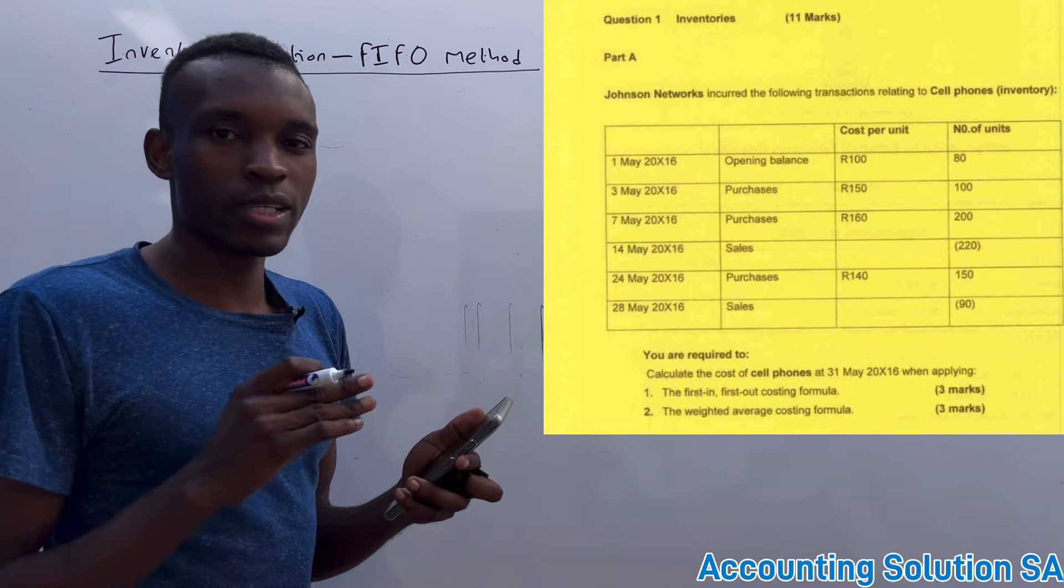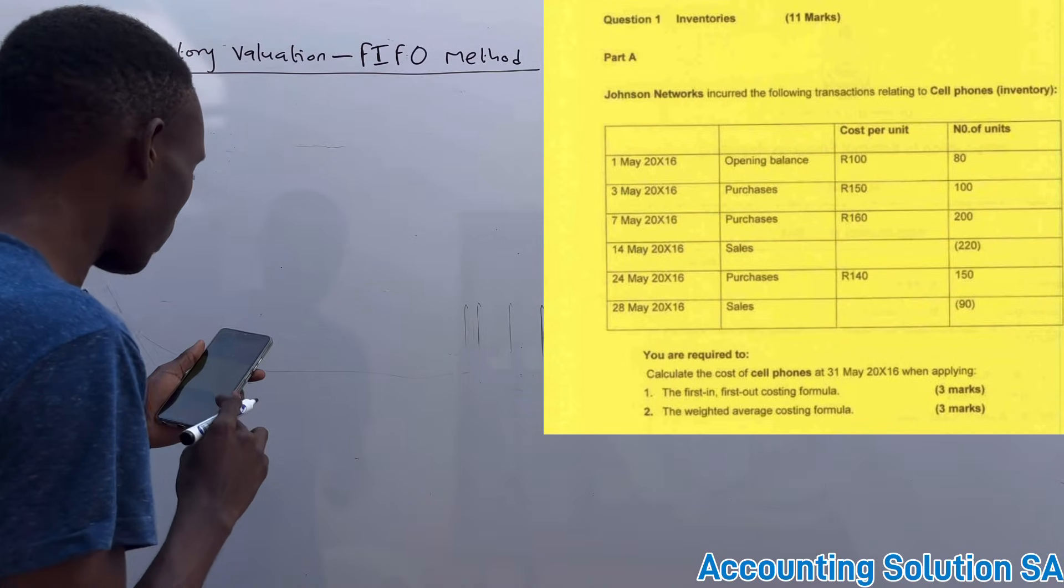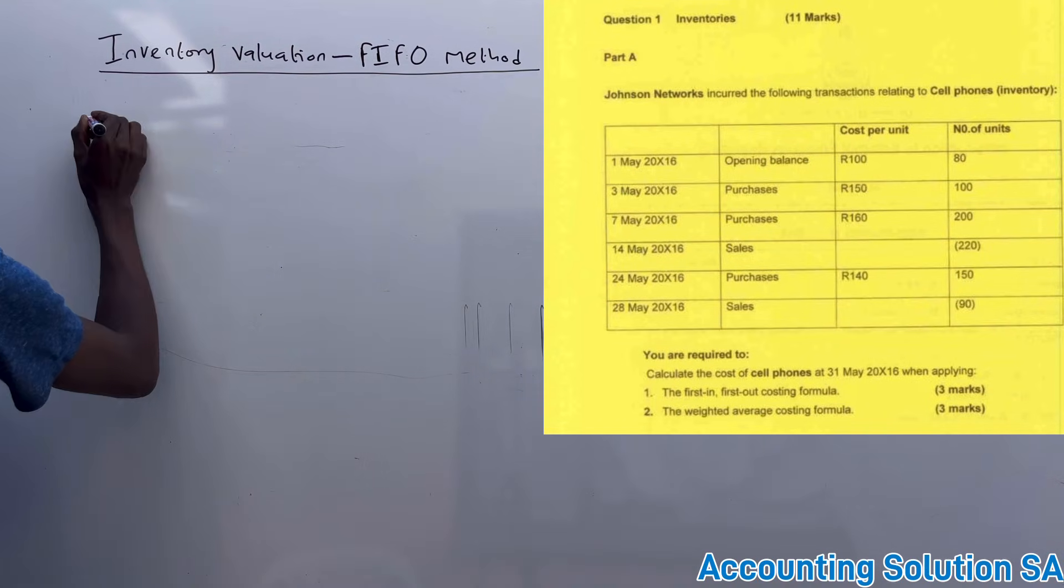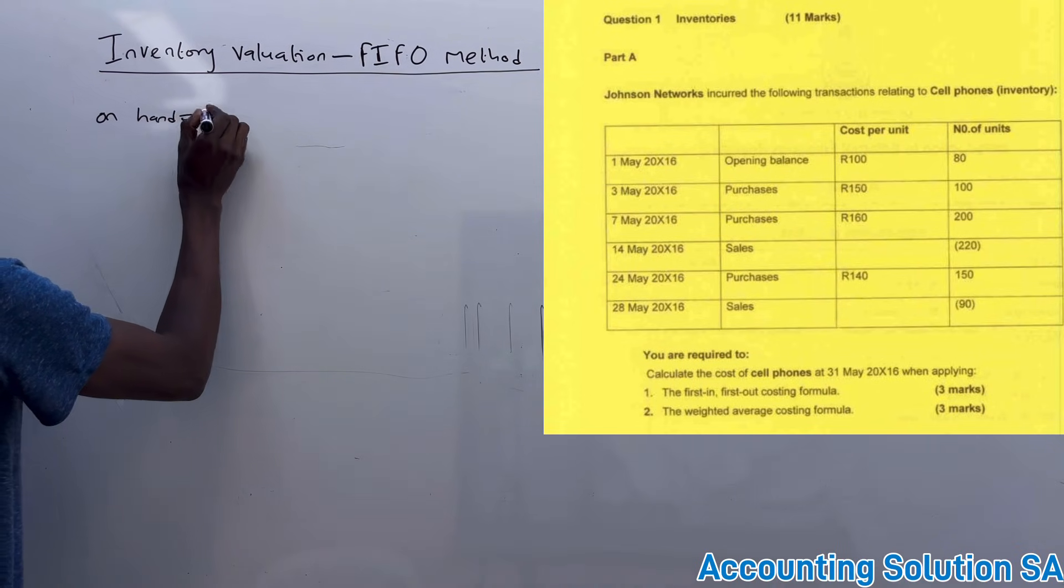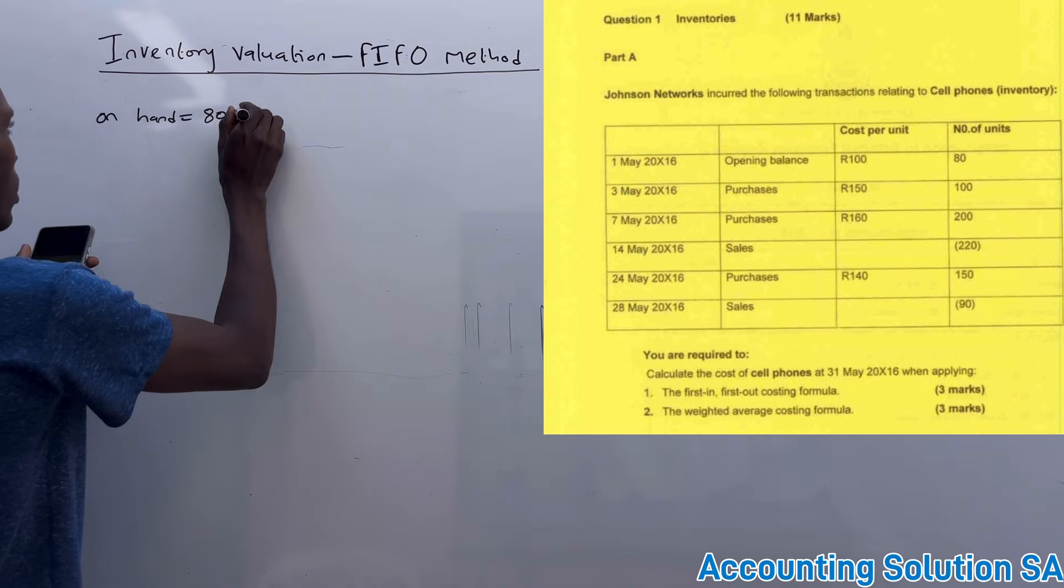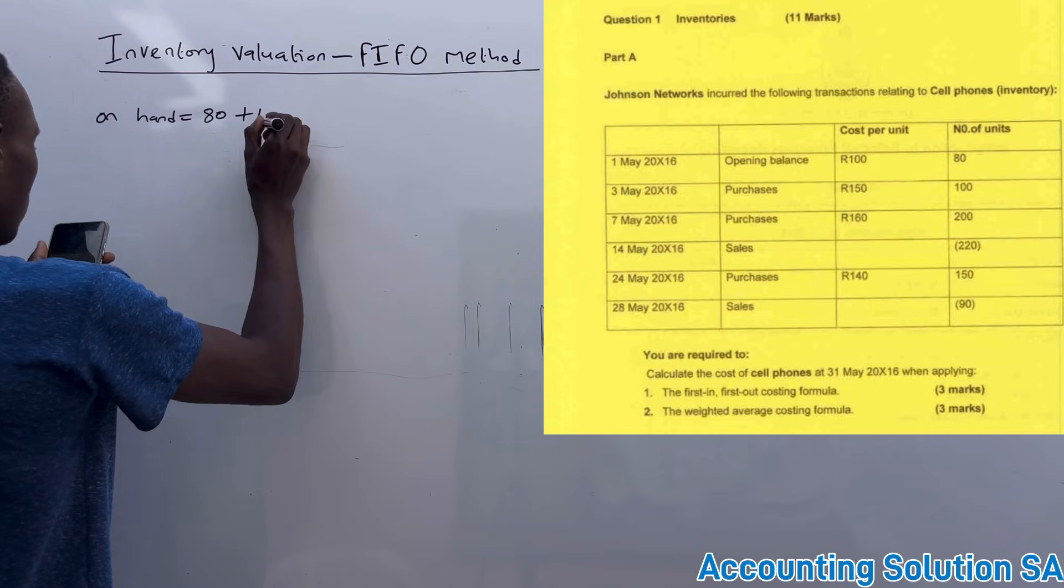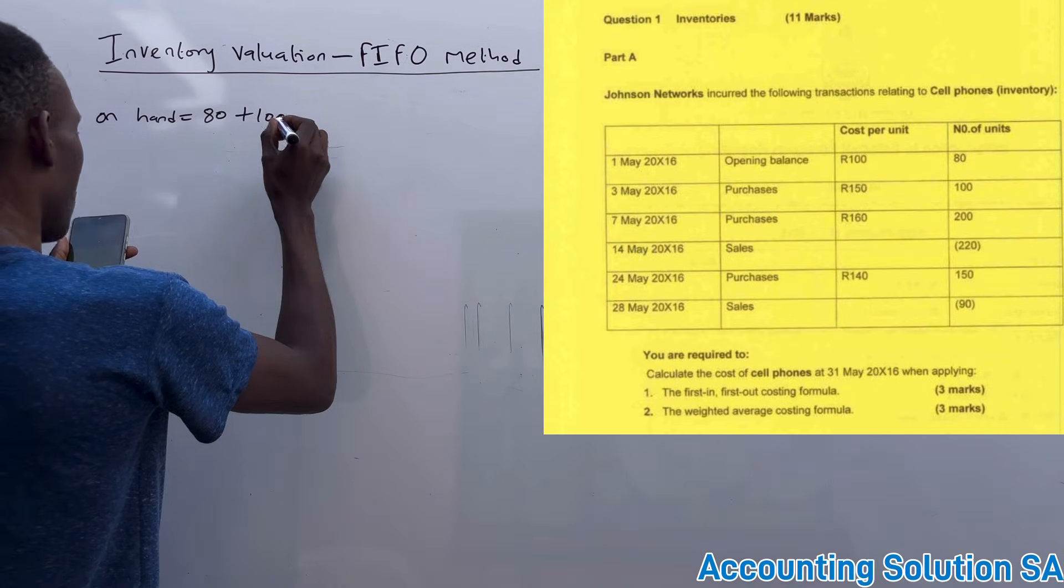If you check at the beginning we had 80 units. We're calculating on hand inventory. At the beginning we have 80 units and we purchase another 100, and again we purchase another 200.